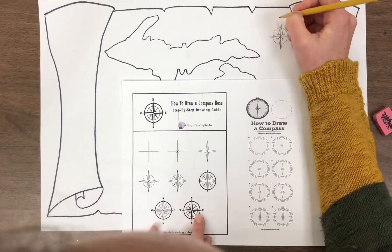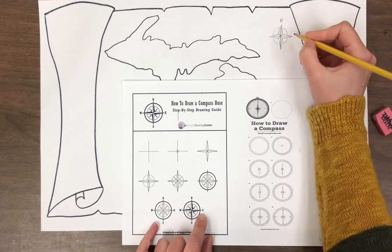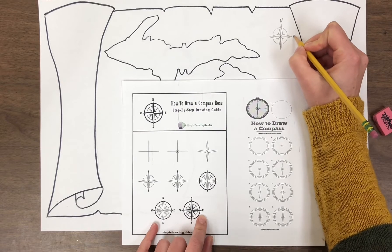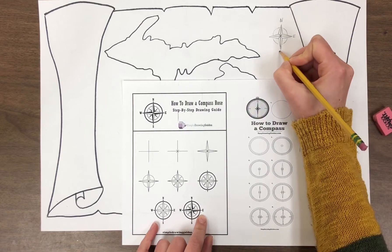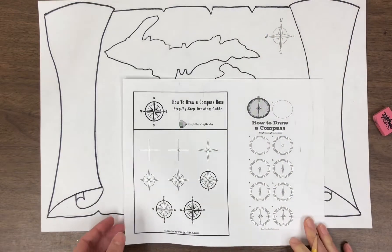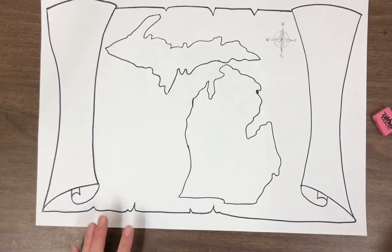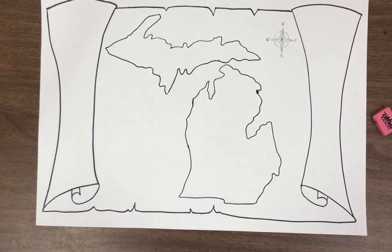And then I'm going to put the directions. So north goes on top and I'll just put an N. Then we have east, south points down and west points to the left. All right. So there is our rose compass, our compass rose.